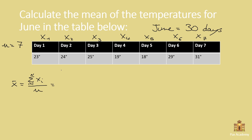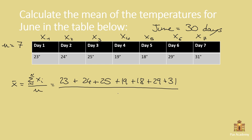So, let's apply this to the formula. We have 23 degrees, plus 24 degrees, plus 25, plus 19, plus 18, plus 29, plus 31. And we divide all these terms by the sample size, which is 7. If you sum all of the terms in the numerator, you should get 169. And this should give you about 24.14 degrees. Therefore, 24.14 degrees is the mean of the temperatures for June.